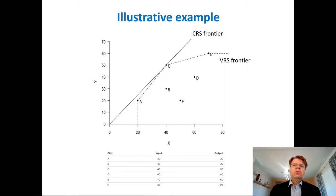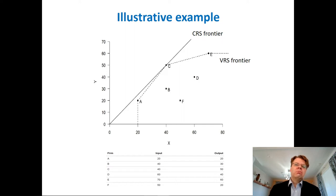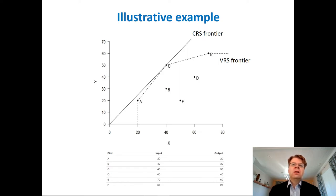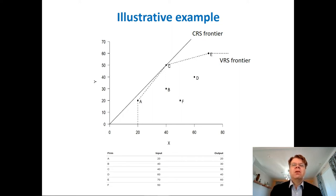If you think about the constant returns to scale frontier, the CRS frontier would simply be this line that starts from the origin and passes through observation C. In this example, observation C is the only 100% efficient unit that can be scaled up or down to form the benchmarks for all other units. The VRS frontier in this example has three 100% efficient units: A, C, and E. The VRS frontier is this broken line, and the three other units B, D, and F are inefficient because they are contained below both the VRS and CRS frontiers.